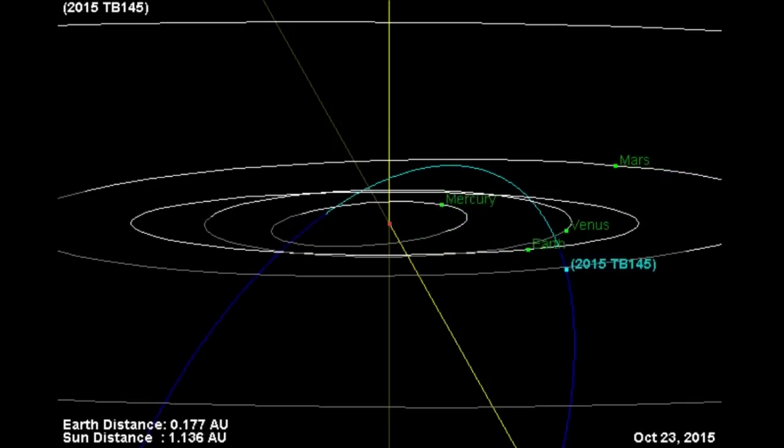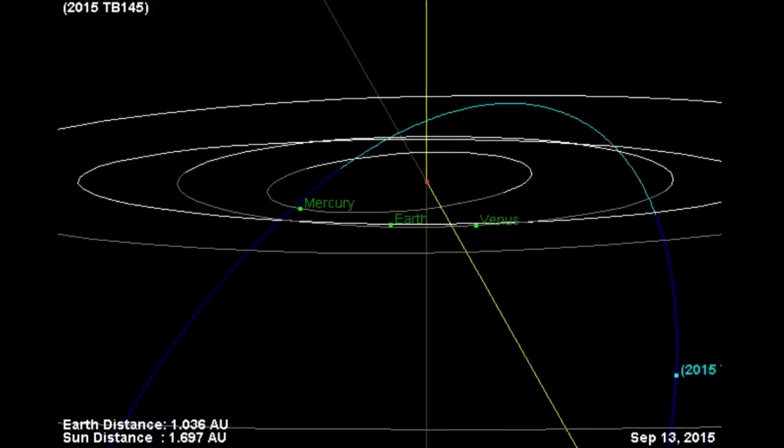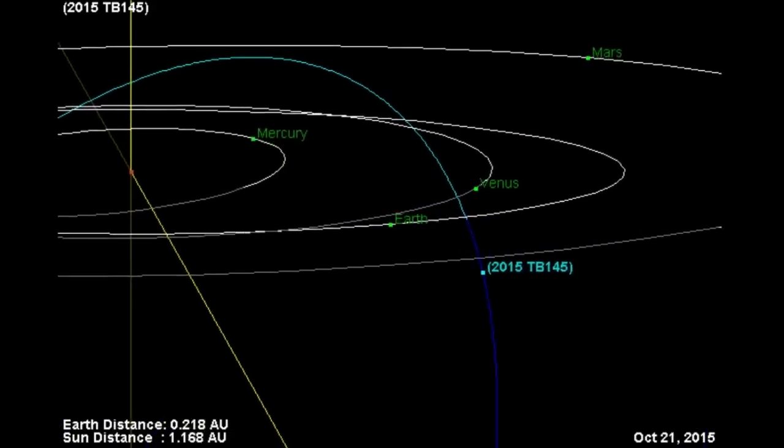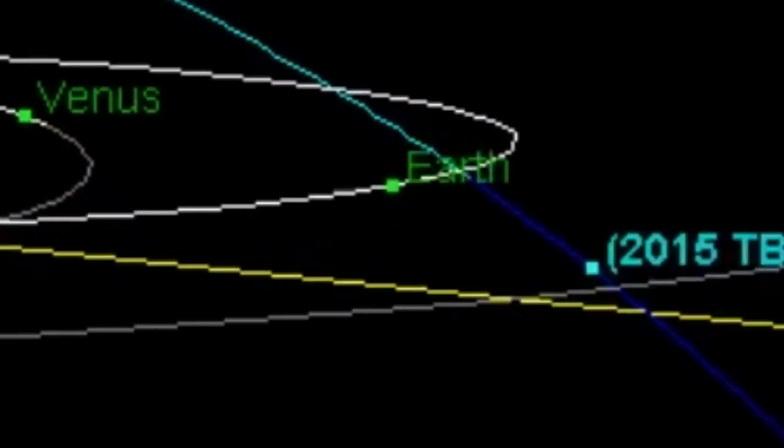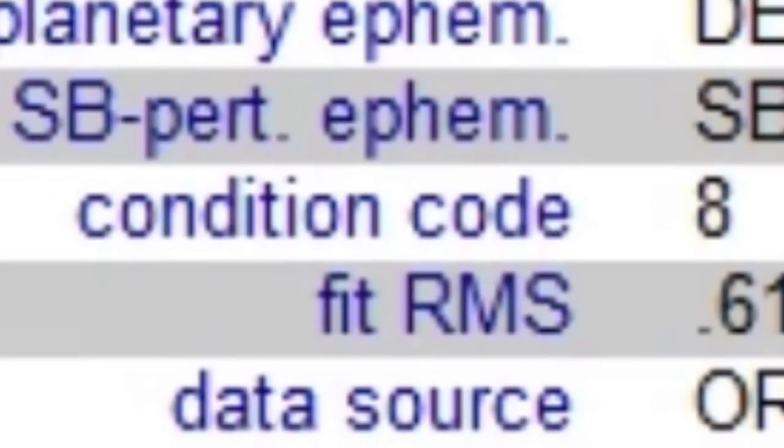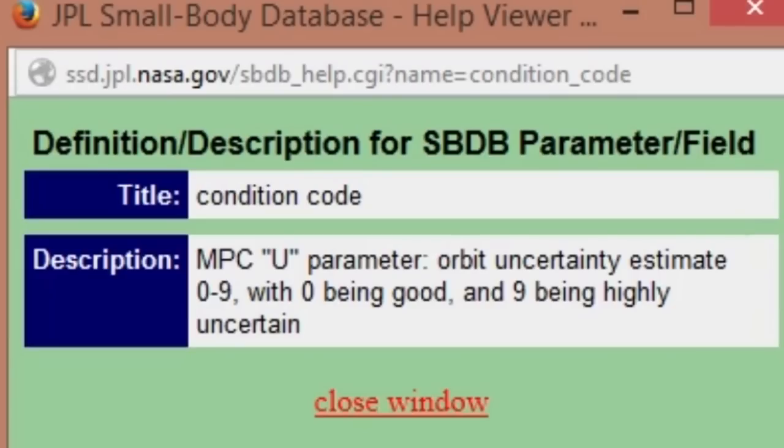I am not joking. They found this huge, massive asteroid just a week ago. They solved it, which means they figured out its orbit, on October 16th. And if you'll notice, it has a condition code of 8.